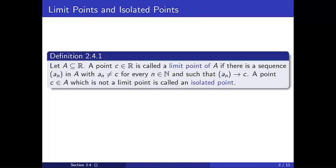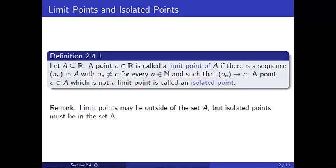Let's look closely at these definitions. Note that a real number c is called a limit point of A if we can construct a sequence so that: 1) all the terms of the sequence are in A, 2) none of the terms are equal to c, and 3) a_n converges to c. Every point in A which is not a limit point is an isolated point. Observe that limit points may lie outside of the set A, but isolated points must be in the set A.